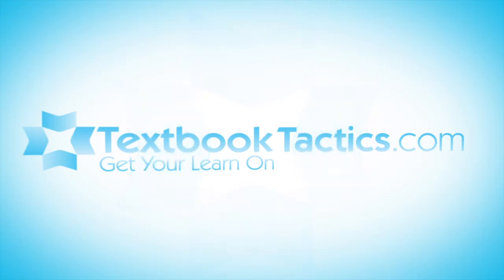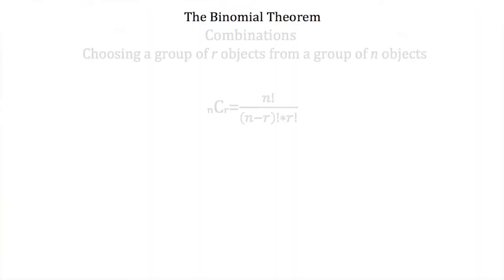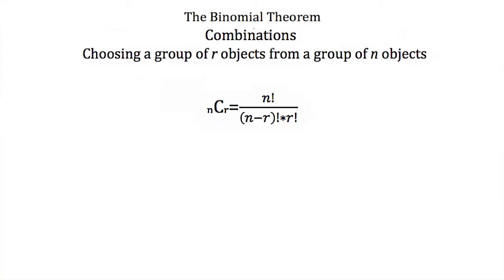This is a tutorial on the binomial theorem and combinations. The first thing we're going to talk about are combinations. Combinations are a collection of r objects selected from a larger group of n objects. So we want to know how many different combinations of r objects out of n objects there are.